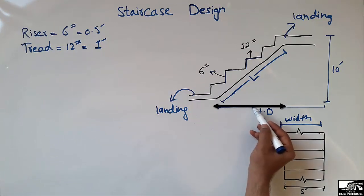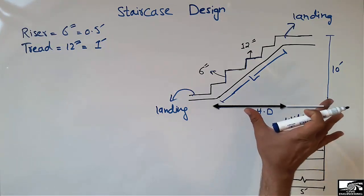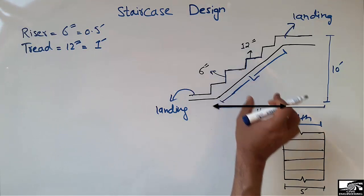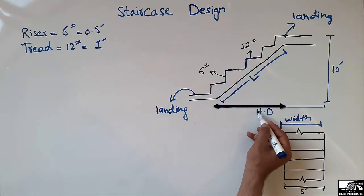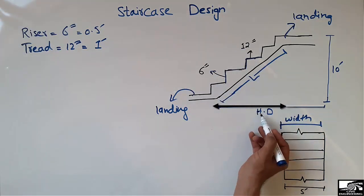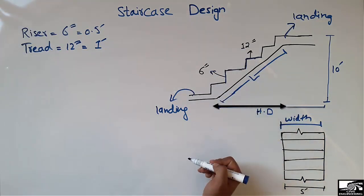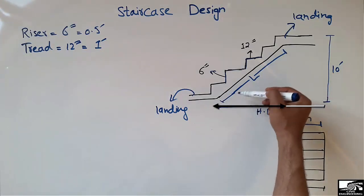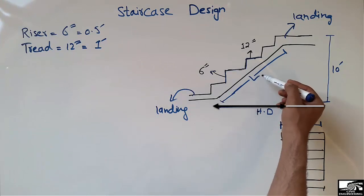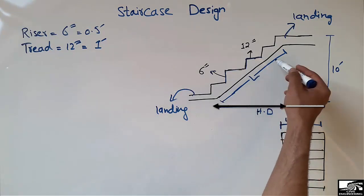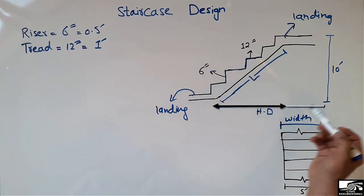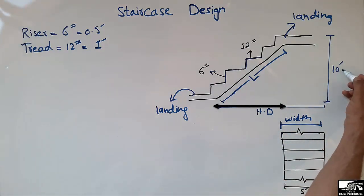This is known as the horizontal distance — the total horizontal distance covered by the staircase. I will also show how to calculate the horizontal distance and the length of the staircase. This is known as the height of the staircase, represented by H.